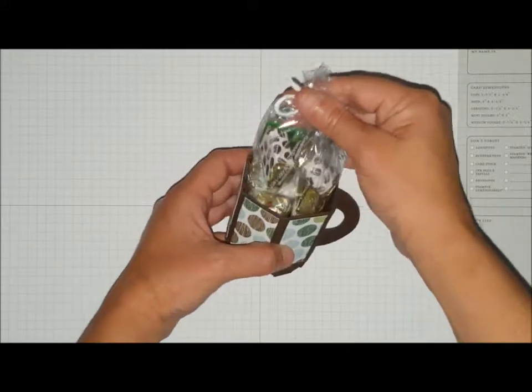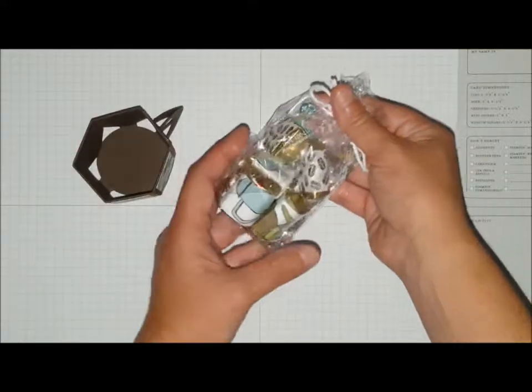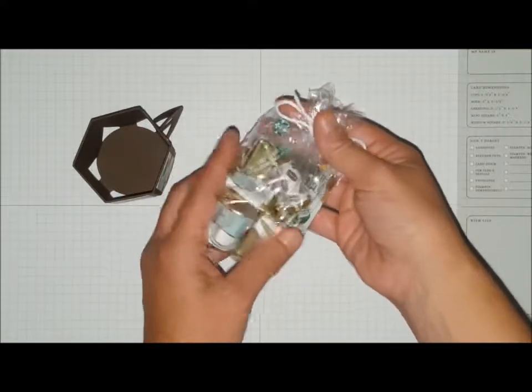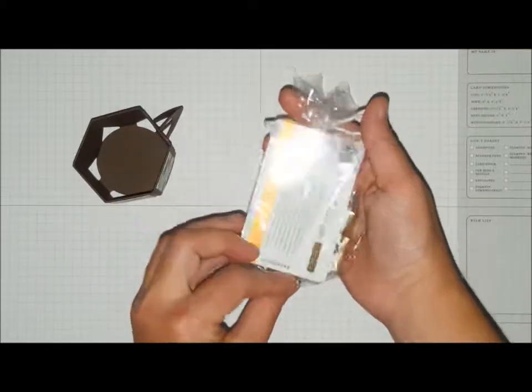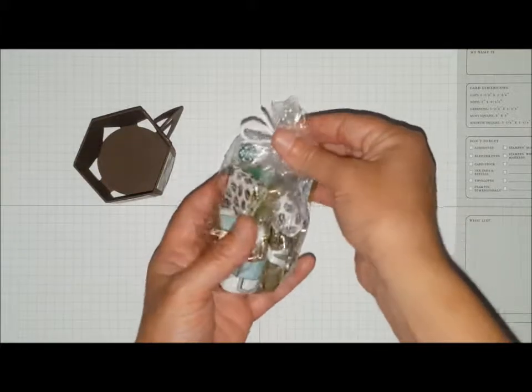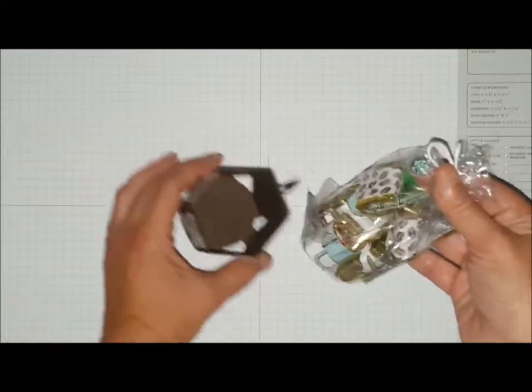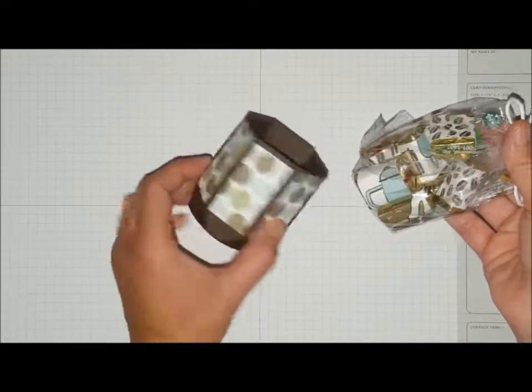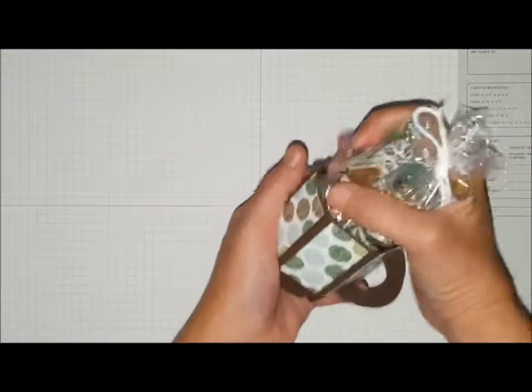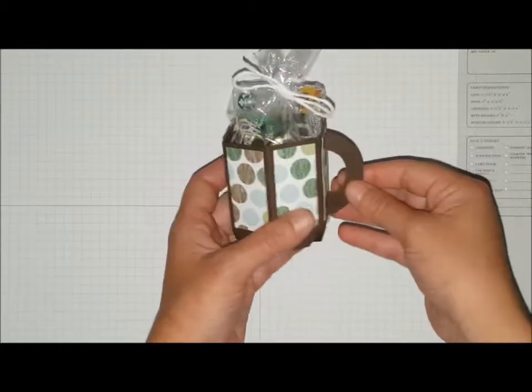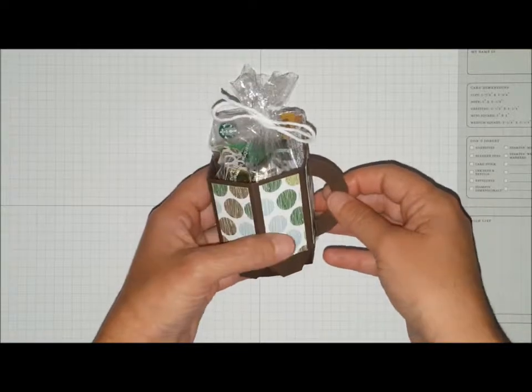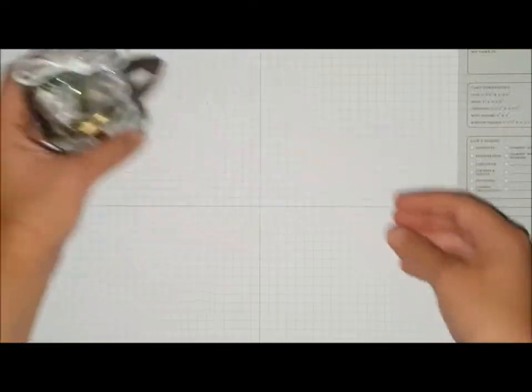What I did was I filled it with a gift card, I wrapped some Hershey's nuggets and I put it in this cute little bag inside a bowl. It is so easy and you can get two mugs out of one sheet of paper, so I'm going to show you how I made this.